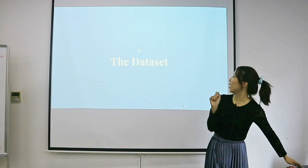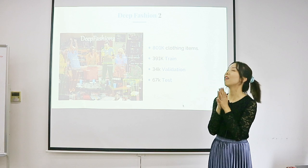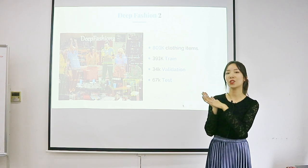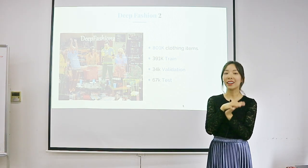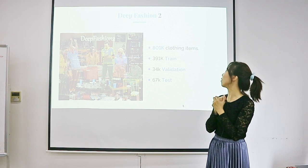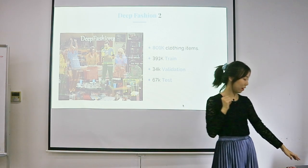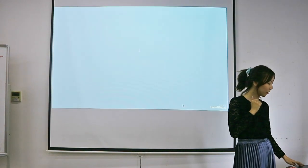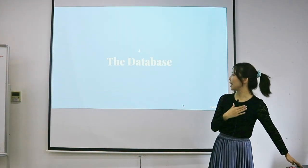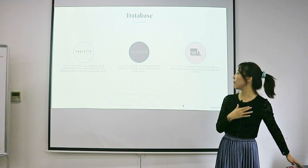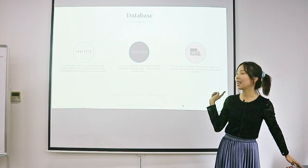Before I go there, I'll talk about the dataset I used to create Wish. It's called Deep Fashion 2 — it is a machine learning challenge dataset with 800,000 clothing items, 391,000 of which are in the training set. I also created the database for recommendations by scraping from three websites.